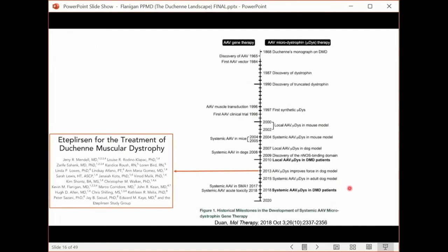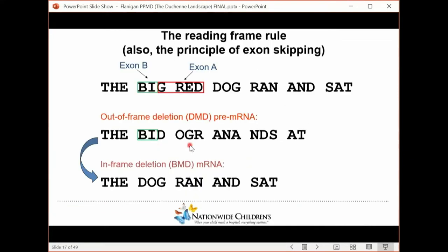Probably the next big thing in our timeline of Duchenne muscular dystrophy was the paper that showed the effect of ateplosin, and then its approval in 2017, ateplosin for treatment of exon 51 skippable Duchenne muscular dystrophy. So what is exon skipping?